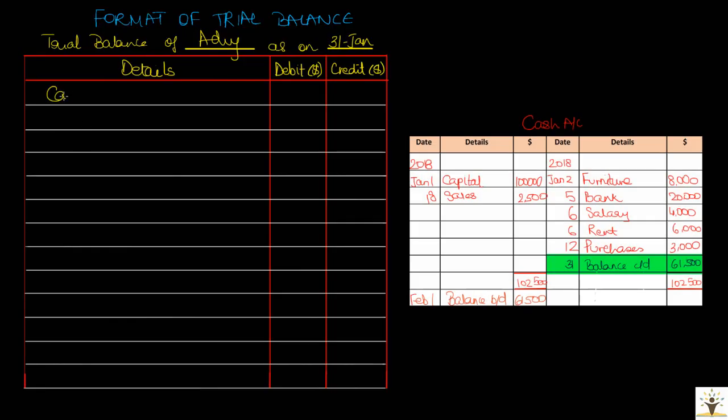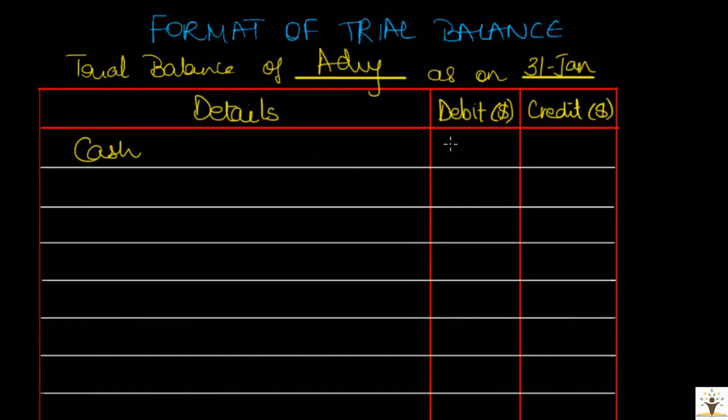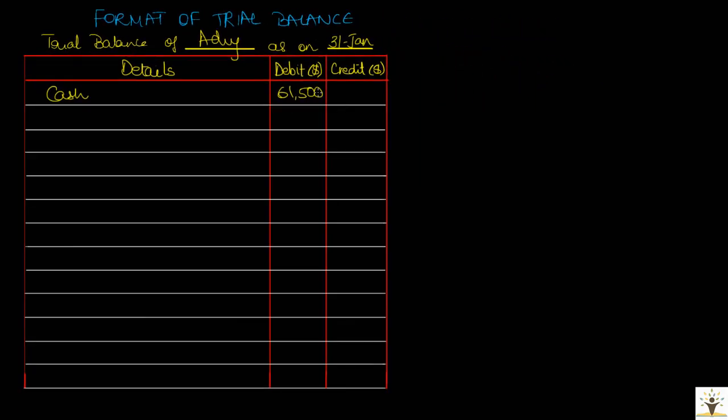In the cash account, debit column was greater than the credit column by $61,500. Hence, cash account has a debit balance of $61,500. Then we have the capital account. Capital account has a credit balance of $100,000.